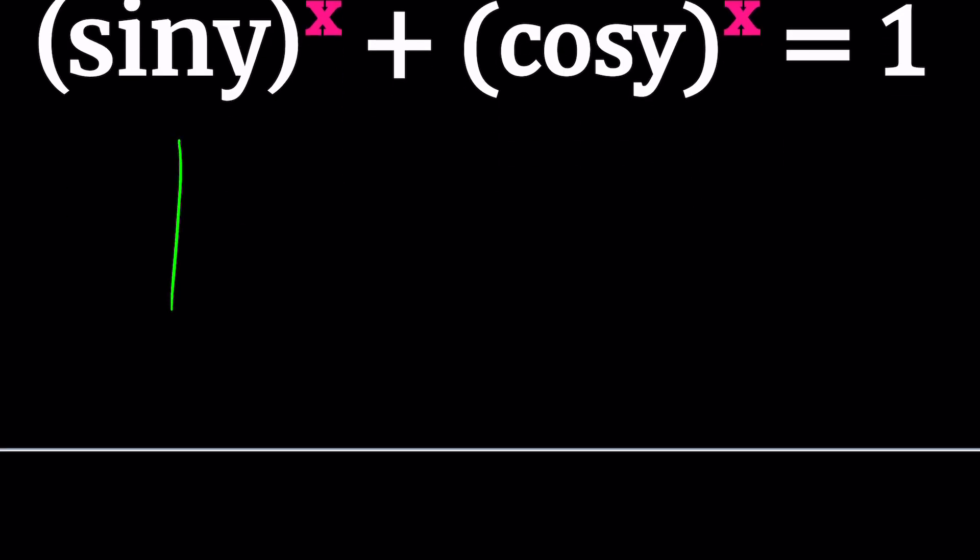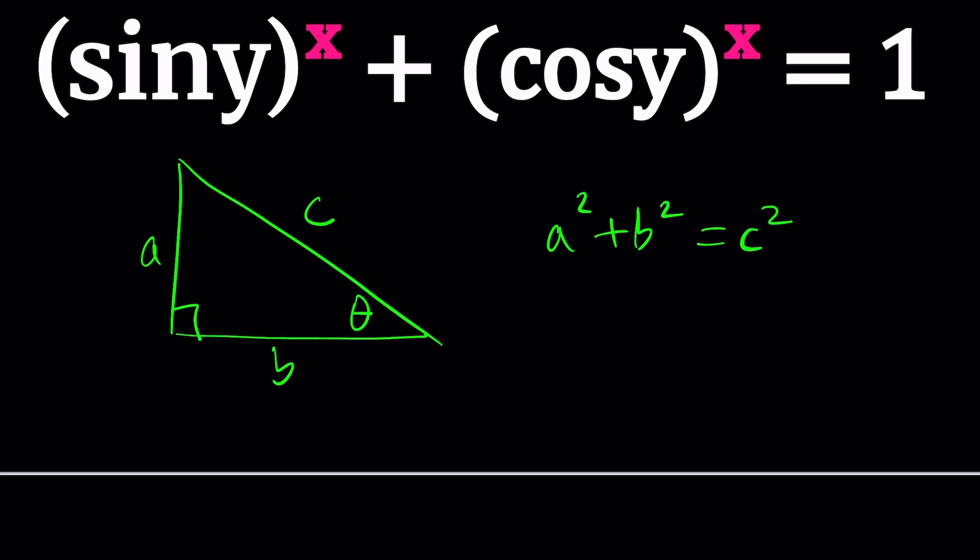If you have a right triangle, let's say this is angle theta, this is a, this is b, and this is c. As you know, a² + b² = c². Thanks to Pythagoras, we have this beautiful theorem. That's probably one of the most important ones, and a lot of proofs are based on this. We want to focus on trigonometry here, so why don't we divide both sides by c².